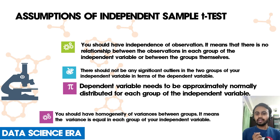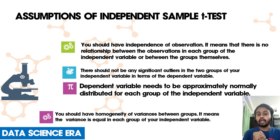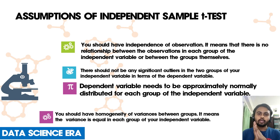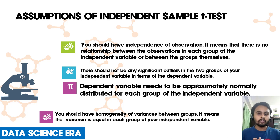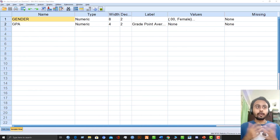Now let's cover the assumptions of this test. First, the observations need to be independent — your observations cannot be paired or matched observations, which I will explain later with the paired sample t-test. Second, there should not be any significant outliers in the two groups of your independent variable in terms of the dependent variable. Third, the dependent variable needs to be approximately normally distributed for each group. And finally, there should be homogeneity of variances between groups, which we will test using a specific test in SPSS.